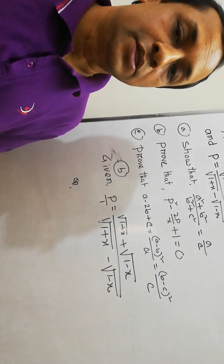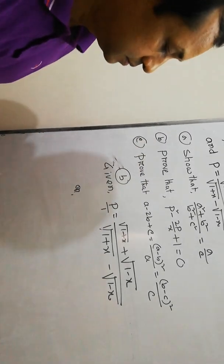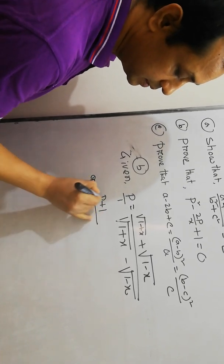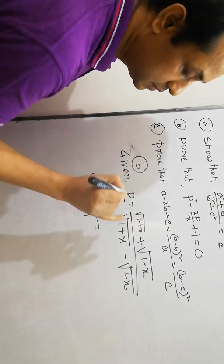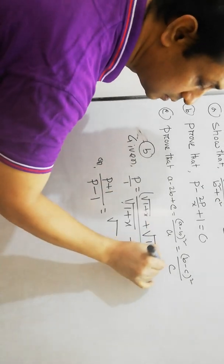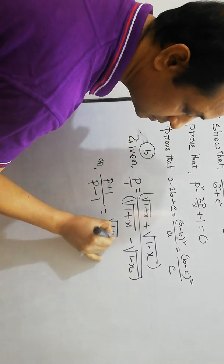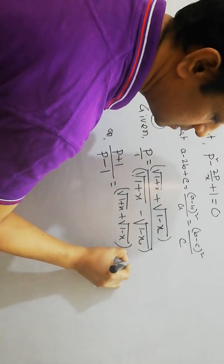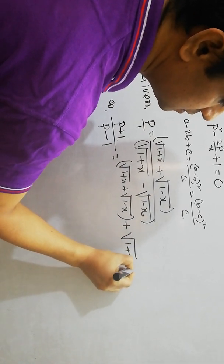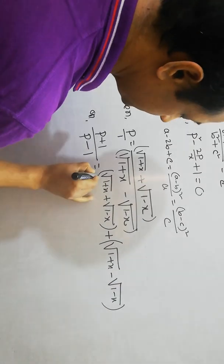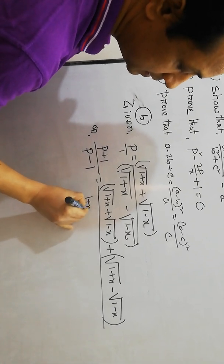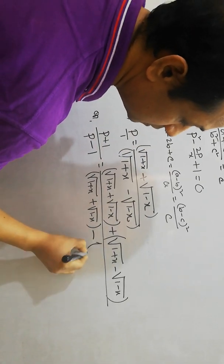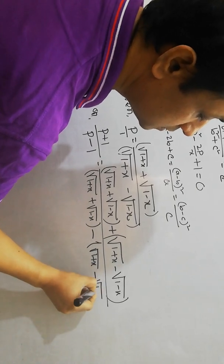Using componendo and dividendo — which means numerator plus denominator divided by numerator minus denominator — we apply it to both sides. So p + 1 by p − 1 equals numerator plus denominator over numerator minus denominator. The numerator is root over (1+x) minus root over (1−x), and the denominator is root over (1+x) plus root over (1−x).